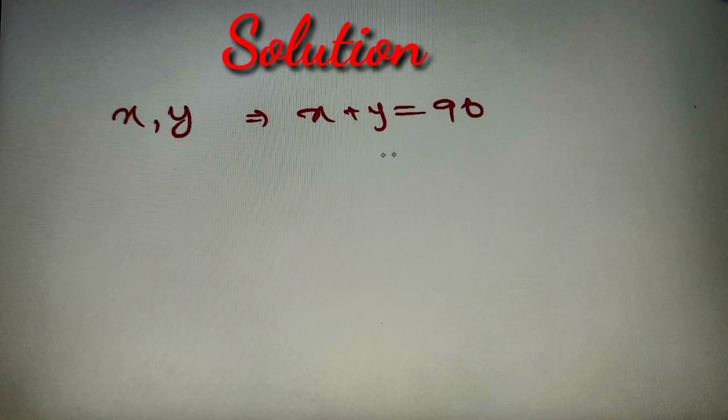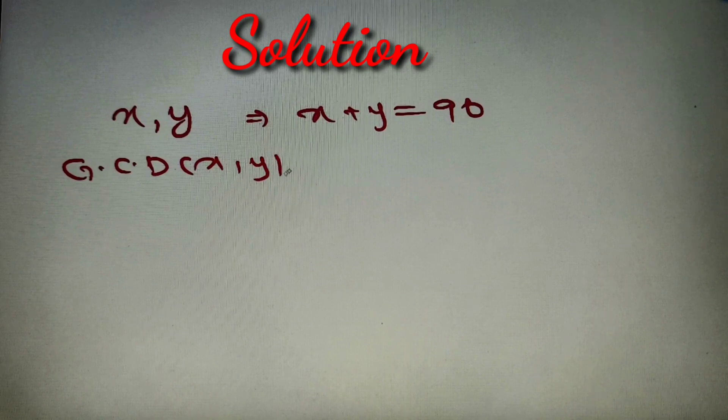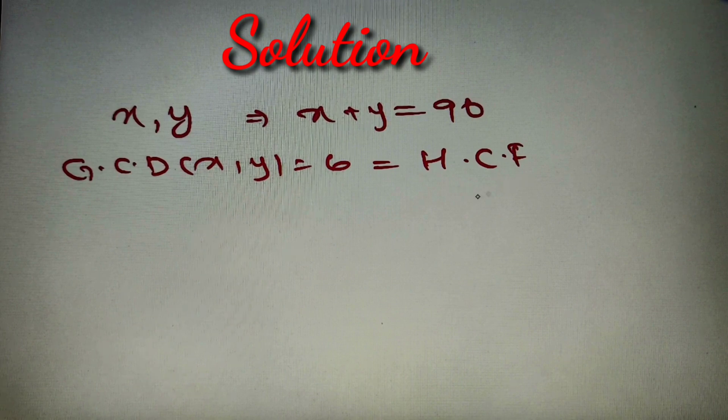According to our given question, we are given two positive integers x, y such that x + y = 90. We are provided one other additional information: the greatest common divisor of x and y is equal to 6, or we can say that the HCF of x, y is equal to 6.